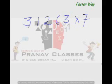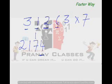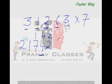From left to right, multiply each digit with 7: 3×7 is 21, 1×7 is 7, 2×7 is 14 — but only one digit can go in each position, so carry forward 1 and write 4. 6×7 is 42, so write 4 then 2. 3×7 is 21, so write 2 then 1.